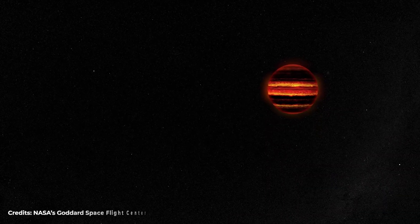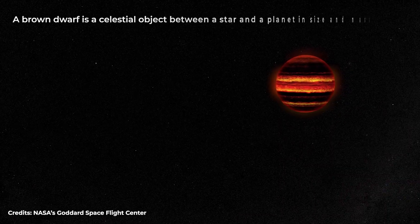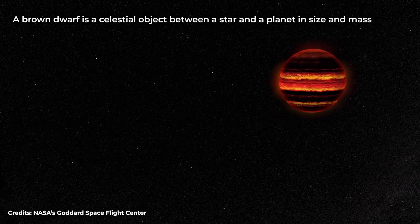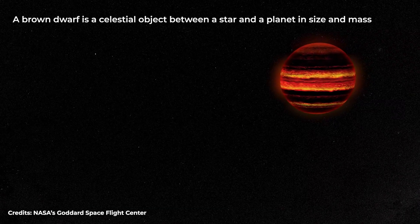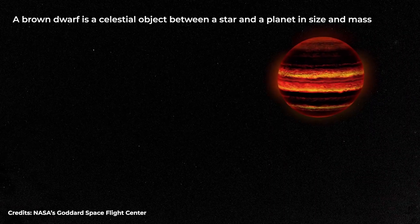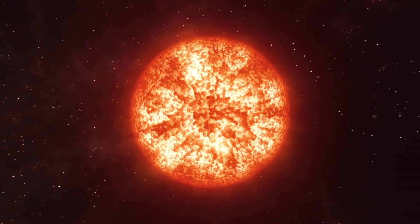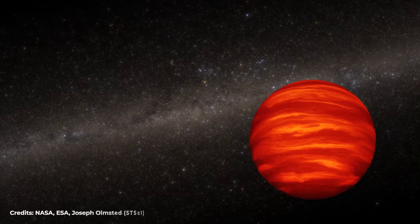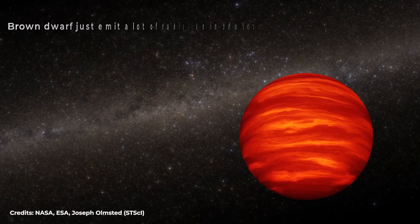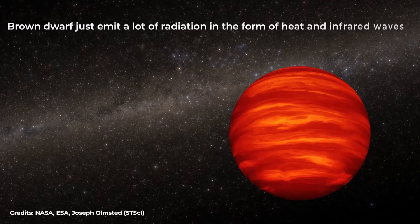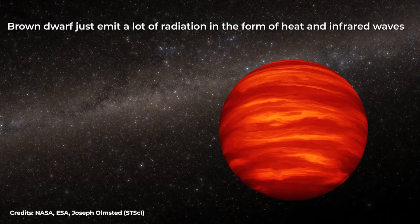Suppose it's the case of a brown dwarf. A brown dwarf is a celestial object between a star and a planet in size and mass. It has a mass less than a star but more significant than a planet. Unlike stars that get their energy from hydrogen fusion, brown dwarfs get their energy from deuterium fusion, and therefore they do not shine. They just emit a lot of radiation in the form of heat and infrared waves.